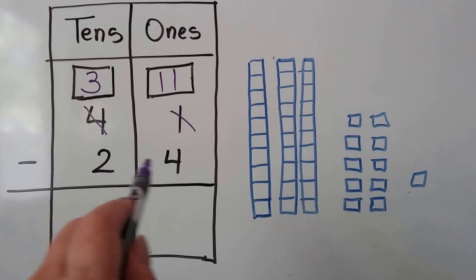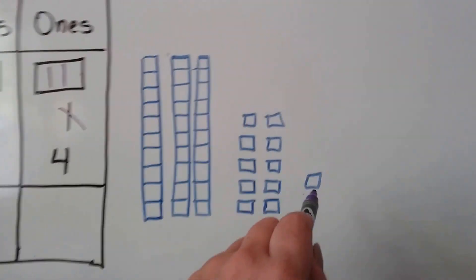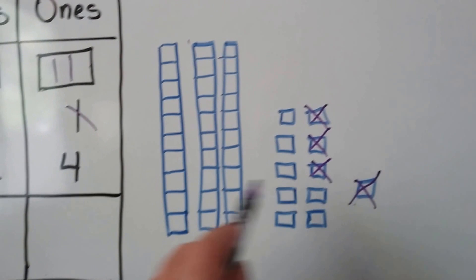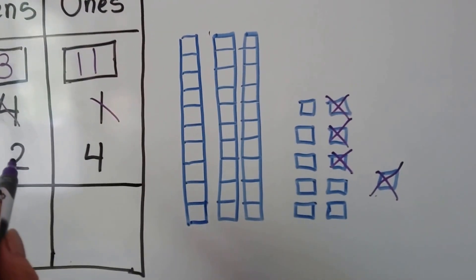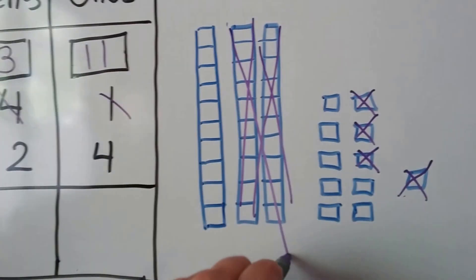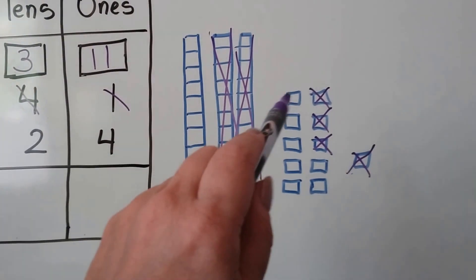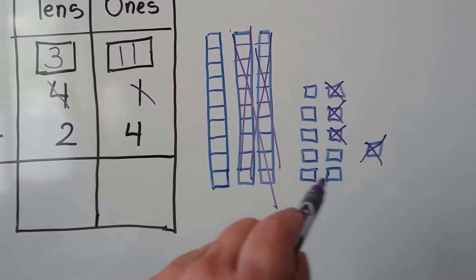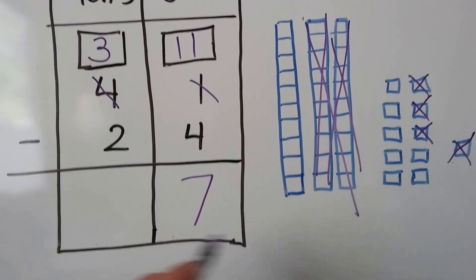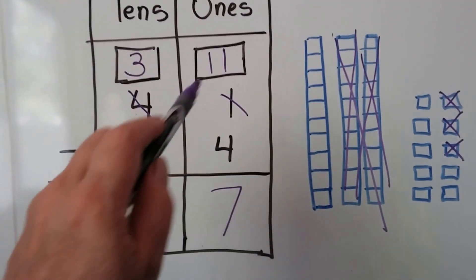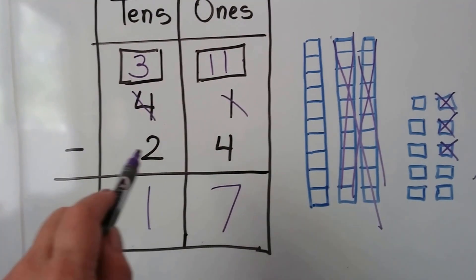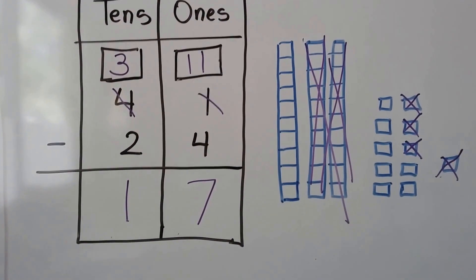We need to take away twenty-four. We take away one, two, three, four ones. And we need to take away two tens — one, two. That's going to leave us with seven ones and one ten. Eleven minus four is seven, and three minus two is one. That works.